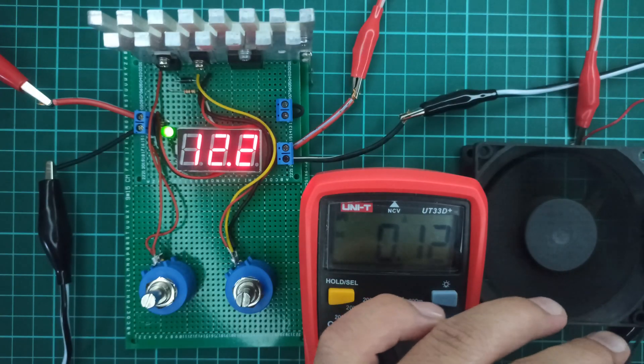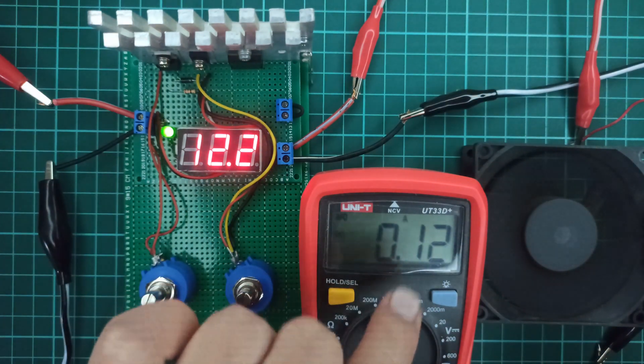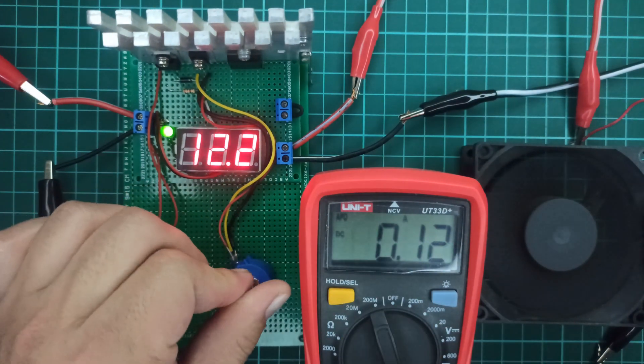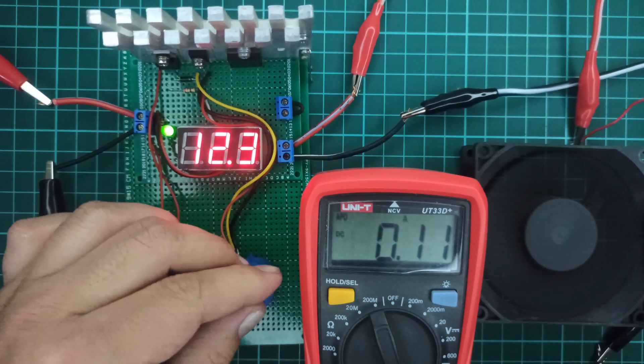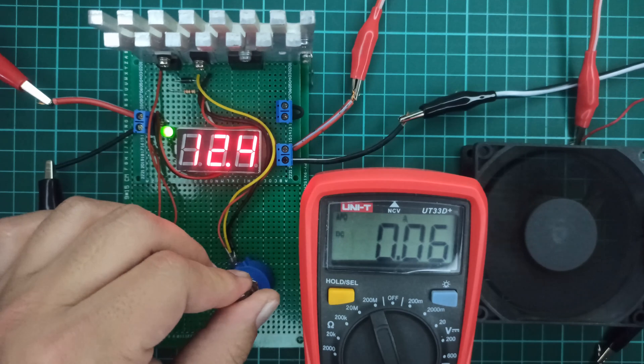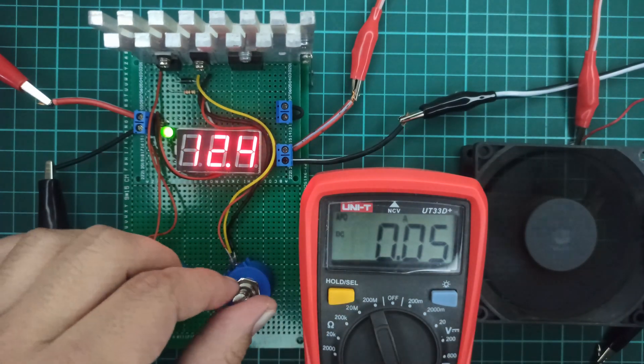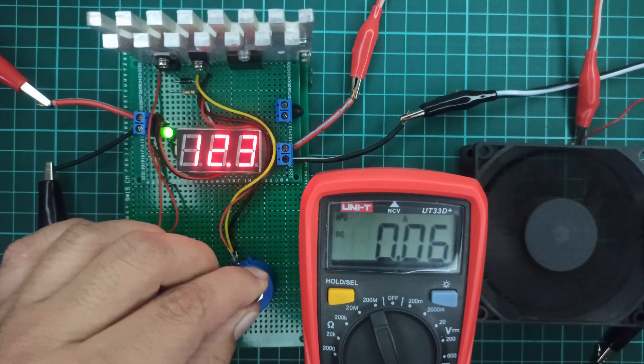Here is another load which is a 12 volts DC fan which is drawing 0.12 amperes at 12 volts and can be adjusted as per requirements.